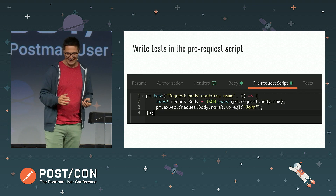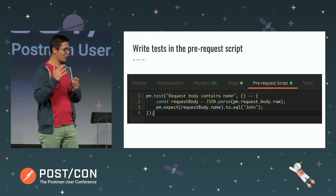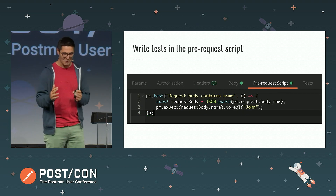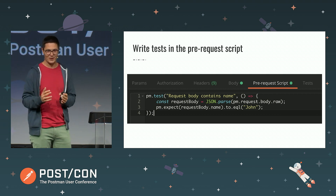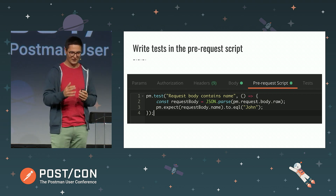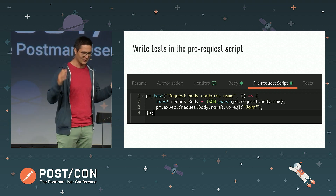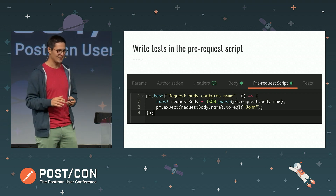Scripting is the power of Postman. Usually you write tests in the test tab — after the request has been sent and the response is available, you can write assertions. But sometimes it makes sense to write some tests on the request side, and you can use the pre-request script part to write tests if you have some assertions to do there. That can be a very interesting separation — what's happening before with the request and what's happening with the response — to put them in separate places if you have a lot of tests and the real estate in Postman is getting crowded.